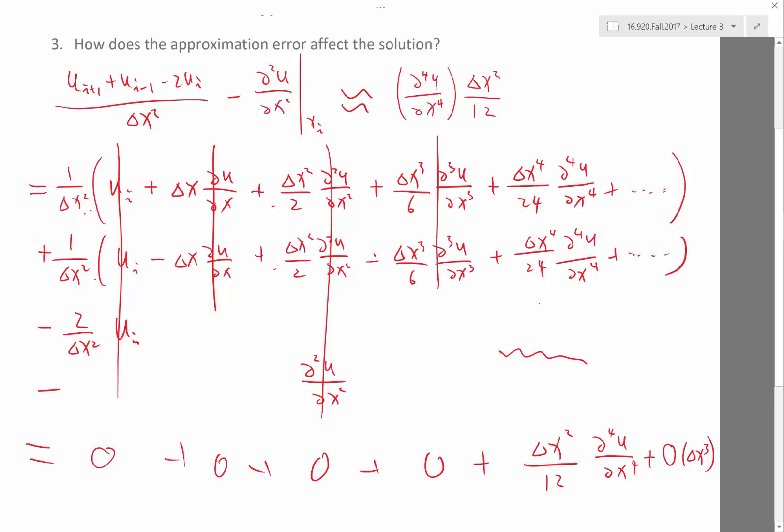Because think of the computation cost. Your computation cost is at least proportional to the number of grid points, right? And in 3D, your delta x is going to be like the cubic root of your grid points.